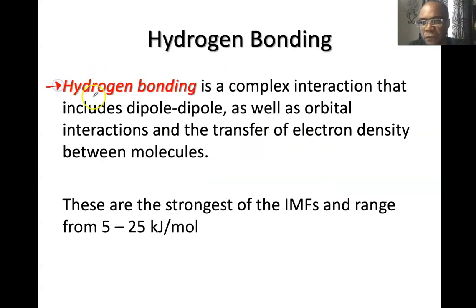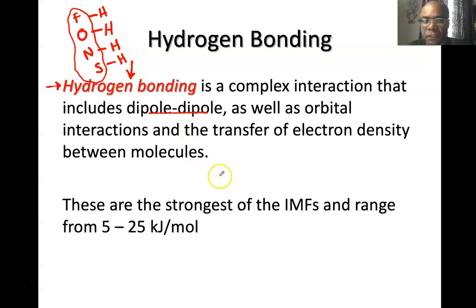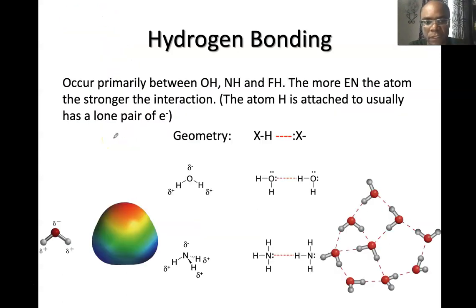The first one we need to discuss is hydrogen bonding. It's a type of dipole-dipole interaction involved in bringing molecules together. Hydrogen bonding is characterized by the presence of hydrogen atoms bonded to electronegative elements like oxygen, nitrogen, sulfur, and fluorine. Whenever hydrogen is bonded to these electronegative elements, you expect that two such molecules can form hydrogen bonds. They are the strongest of the IMFs. To predict whether hydrogen bonding will occur, look for a hydrogen bonded to any of these electronegative elements: chlorine, oxygen, nitrogen, or sulfur. The best example is in water.